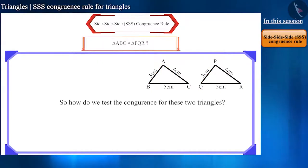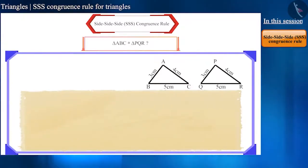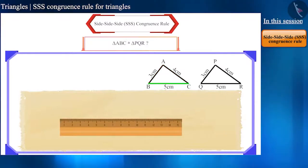Friends, let us take a paper and by using the given length of the sides, let's construct a triangle. Here, in triangle ABC, let's consider BC as the base and draw a line of length 5 cm.